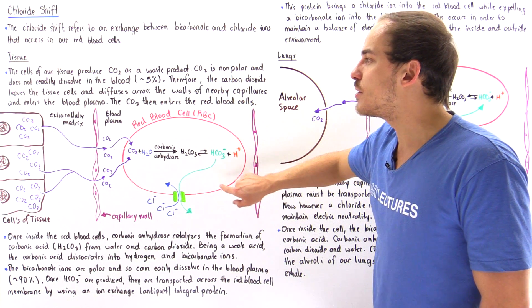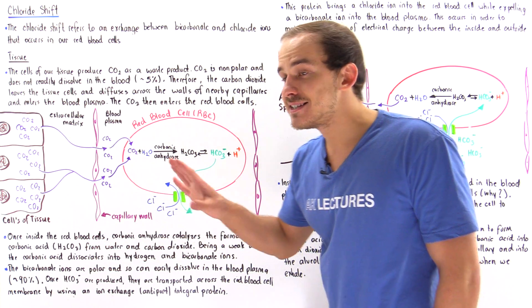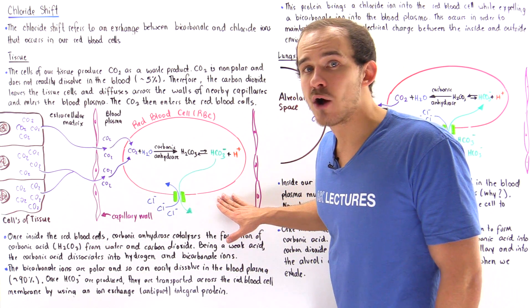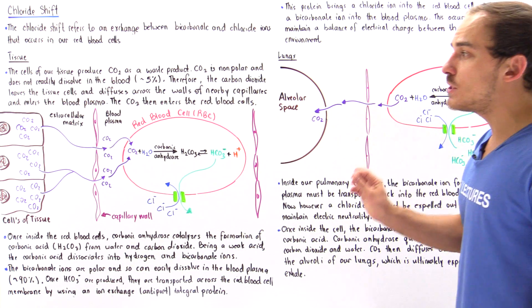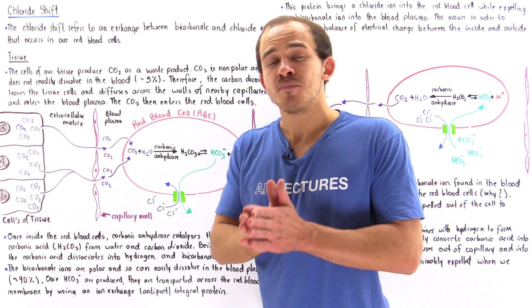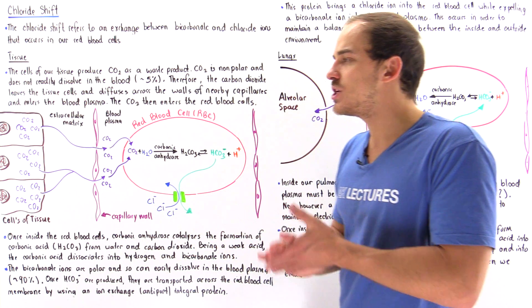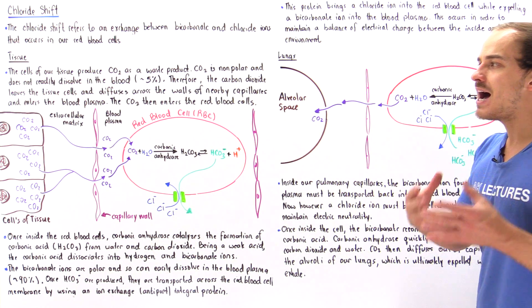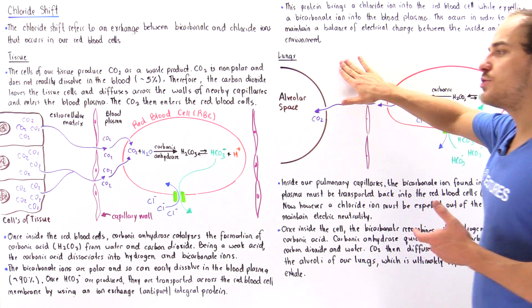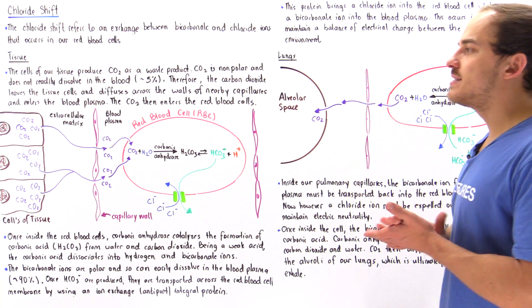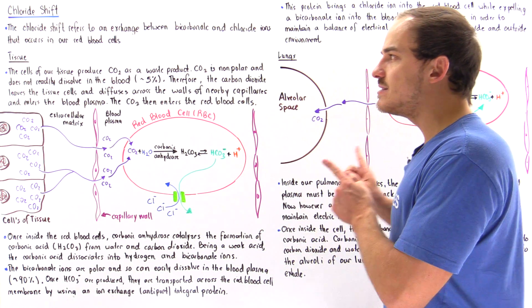About 90% of carbon dioxide exists in its bicarbonate ion state inside the blood plasma. About 5% exists dissolved in the blood plasma as CO₂, and the rest is actually bound to hemoglobin — so hemoglobin doesn't only bind oxygen, it can also bind a small amount of carbon dioxide.